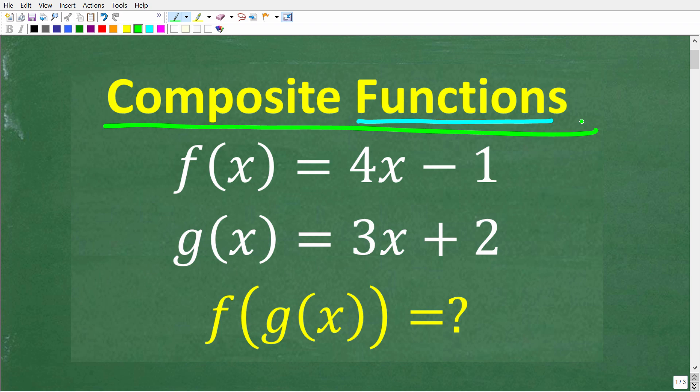But in this particular video, we're going to only be focusing in on composite functions. And this tends to confuse a lot of people because I think the notation looks a little bit scary. All right, so here is the problem. We have f(x) is equal to 4x minus 1, and g(x) is equal to 3x plus 2. So given these two functions, we want to find the composite function f(g(x)).